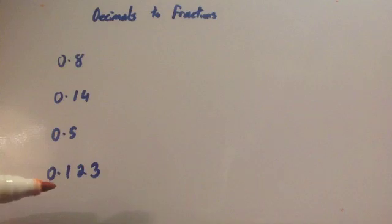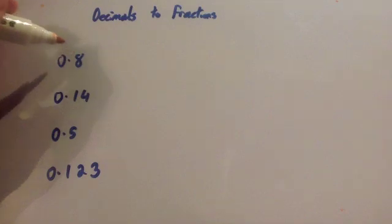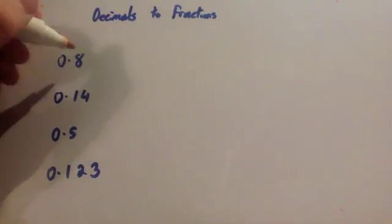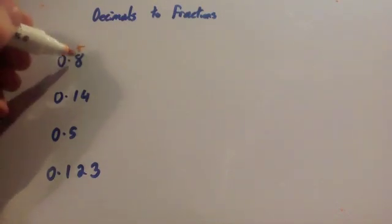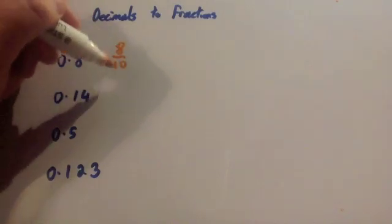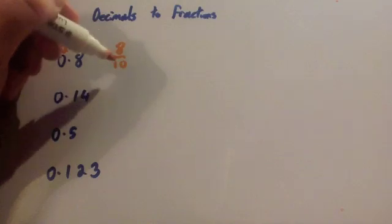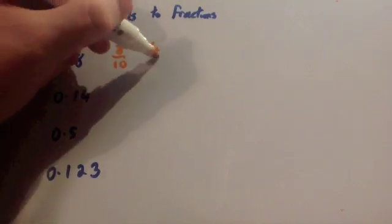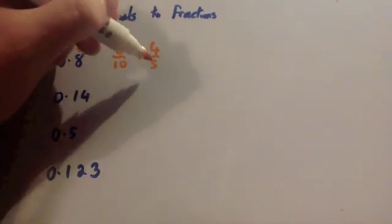0.5 and 0.123 from decimals to fractions. So 0.8, that's units, tenths, so units, tenths, you've got 8 tenths, so it's going to be 8 over 10. Now this can be simplified, 8 and 10 are both divisible by 2, so cancel it down to 4 fifths. So your answer is 4 fifths.